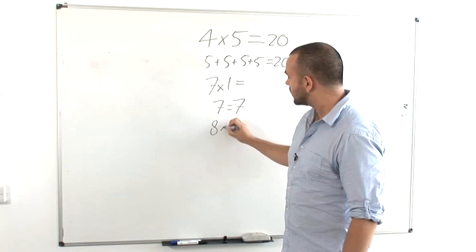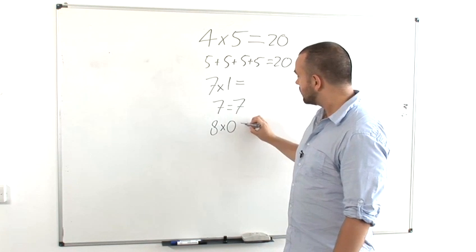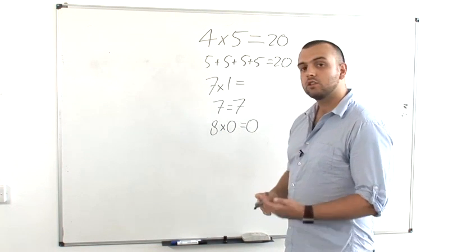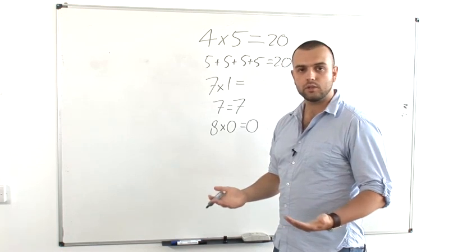Finally, what is a number times zero? Times zero means zero lots of eight, which means it's just zero. So multiplying a number by zero is always equal to zero.